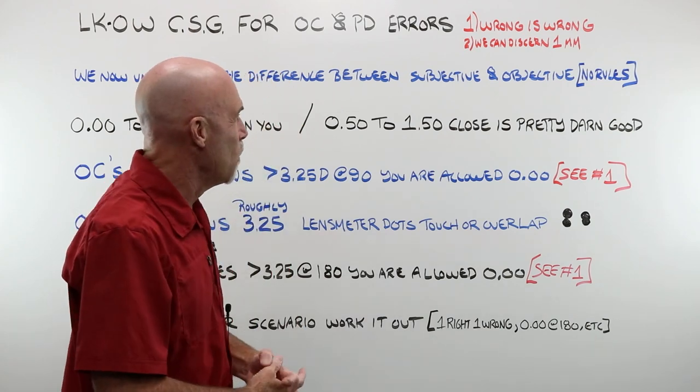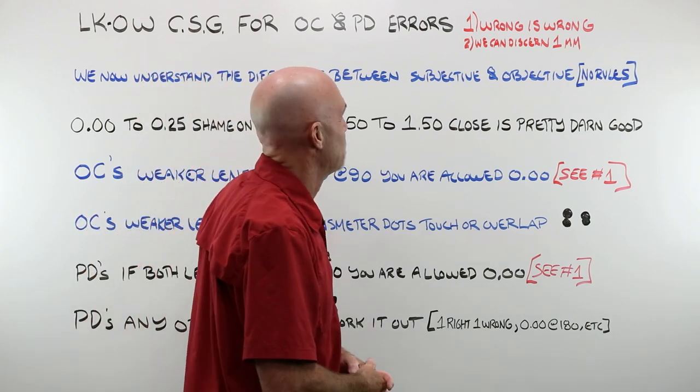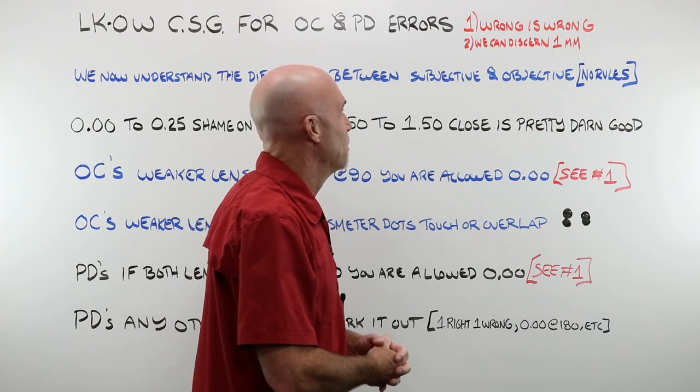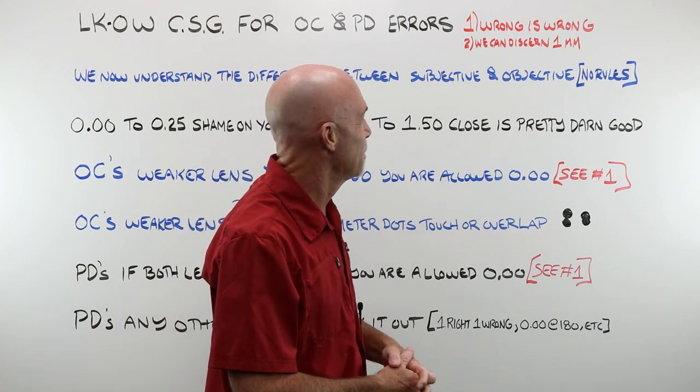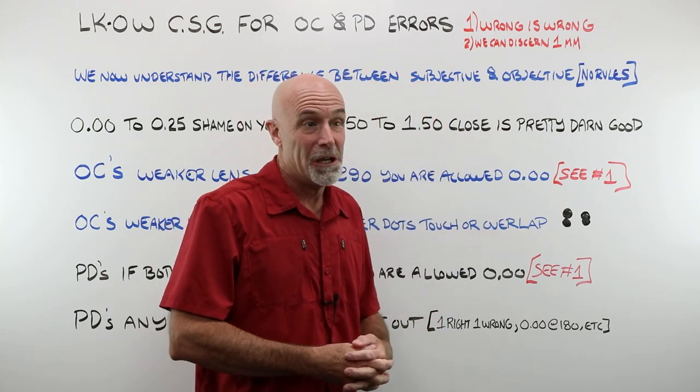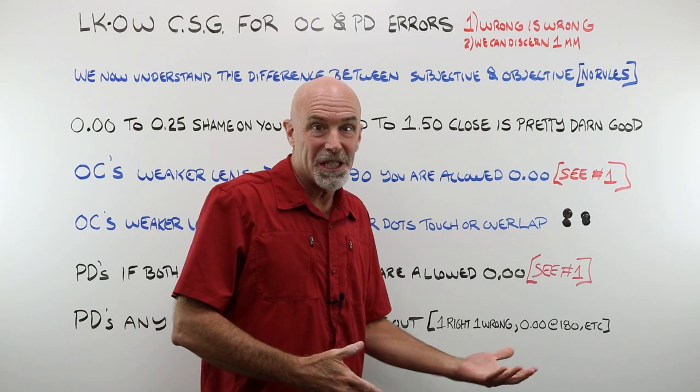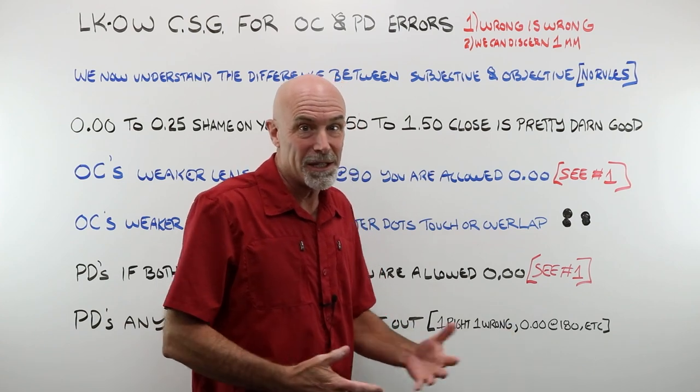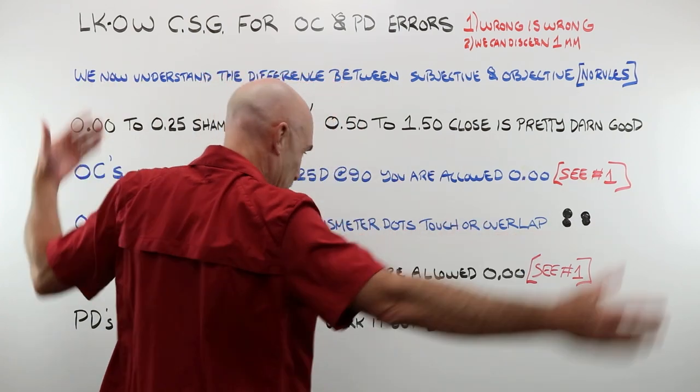Rule number one is our favorite. Wrong is wrong. If you ordered a job with PDs of 34, 34, you dot things up and it comes in at 30, 30. They were made wrong. Somebody did the layout work wrong. Send them back and get them made right. We're not going to go through all this.